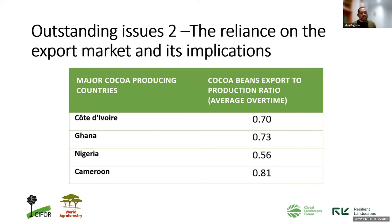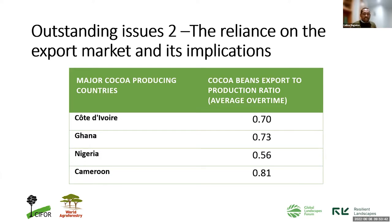The second issue is the reliance on the export market and its implications. For at least four of the major cocoa producing countries, the export-to-production ratio is quite high. This means smallholder farmers who produce this commodity are exposed to factors beyond their control, because the export market is not under the jurisdiction of the producing nation or communities. Their risk at the local level would be much higher than expected.